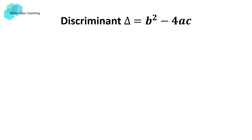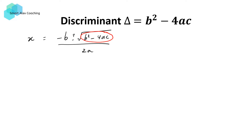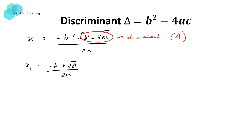Before we start the question, we need to quickly review the concept of discriminant. The quadratic formula is given by x equals negative b plus or minus the square root of b squared minus 4ac, over 2a. The expression underneath the square root sign is what we call the discriminant, denoted by the delta symbol. The quadratic formula returns two solutions: the first root is negative b plus the square root of the discriminant over 2a, and the second root is negative b minus the square root of the discriminant over 2a.